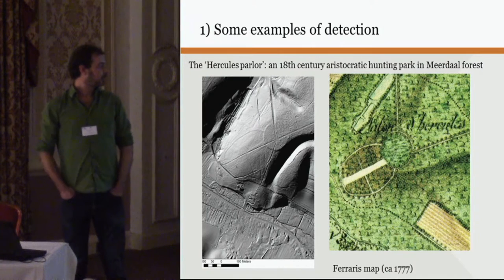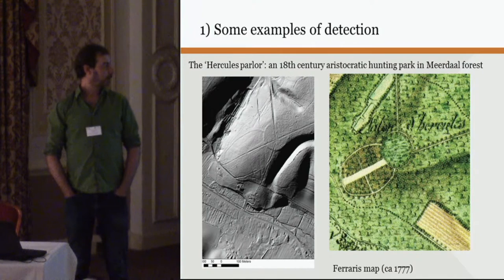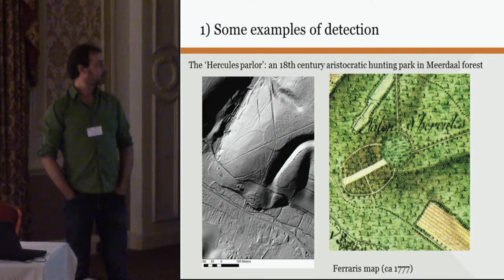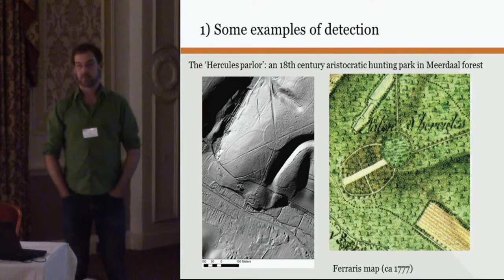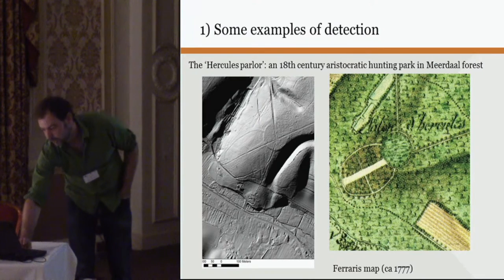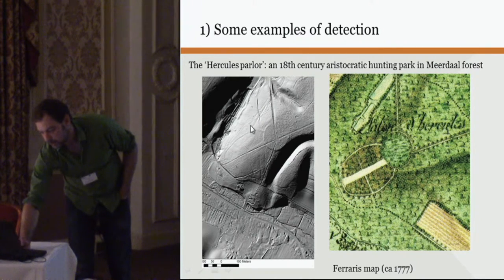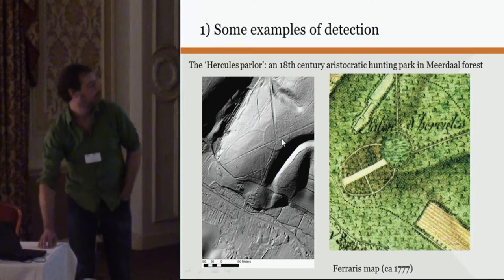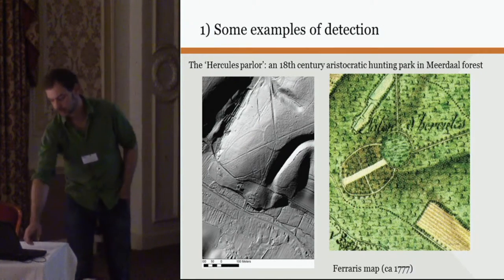Another nice example from the same forest: a historical structure known as the Hercules Parlor, which is clearly visible on the Ferraris map from the 18th century, and also appears very nicely on the recent DTM data, showing it is also very well preserved — which was not known before.